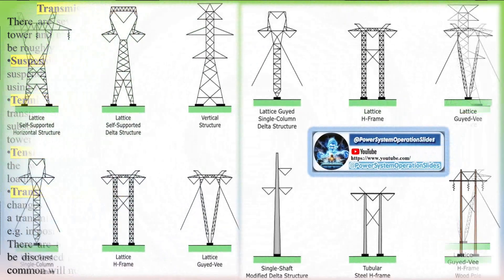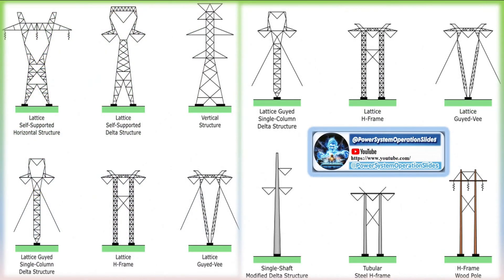Fiber optic cables, essentially made of glass, cannot conduct electricity and are not affected by lightning strikes. You may also notice fiber optics running a few feet below transmission conductors. Adding telecommunication lines increases the return on investment associated with building transmission networks, and fiber optic lines may be operated by the utility or leased to cable or phone companies.